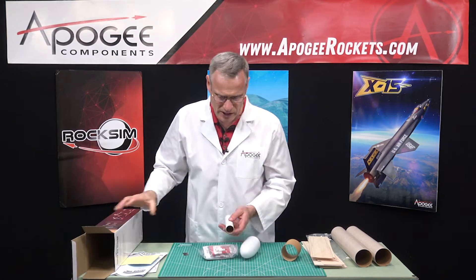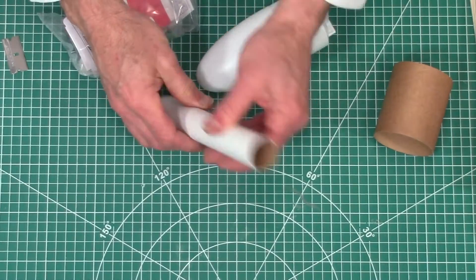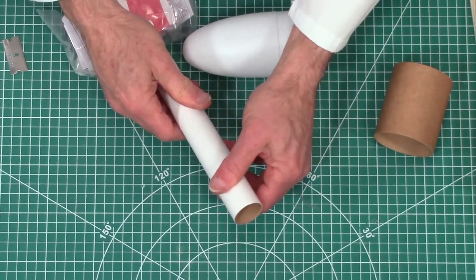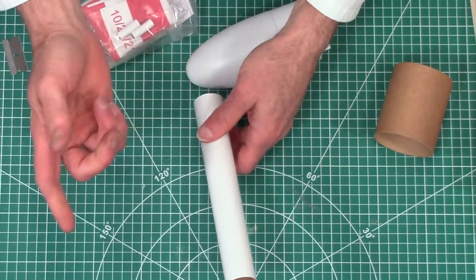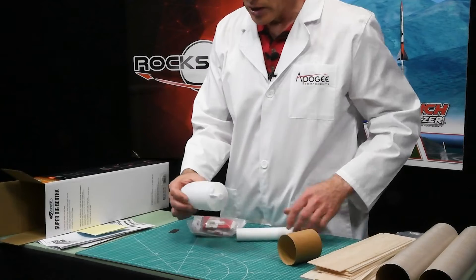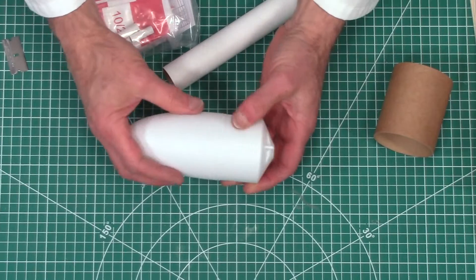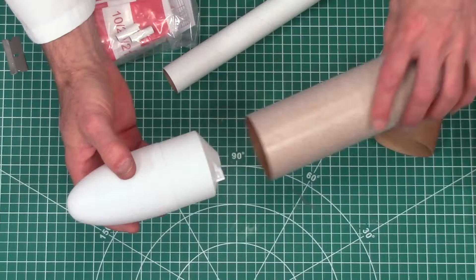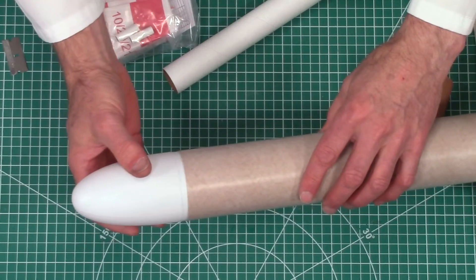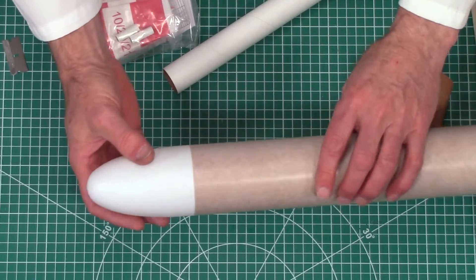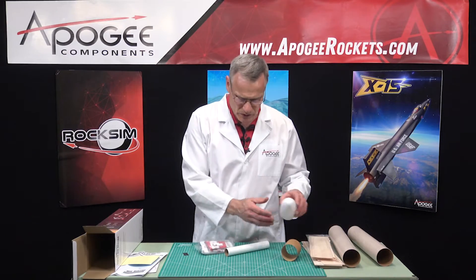Okay, so that's the rest of the box. We have our engine mount tube. This is a thick wall tube. That's nice, because it's going to be 29 millimeter motors. We have a blow molded nose cone. And this is a BT-80 size, and that's a really nice fit. I like that.